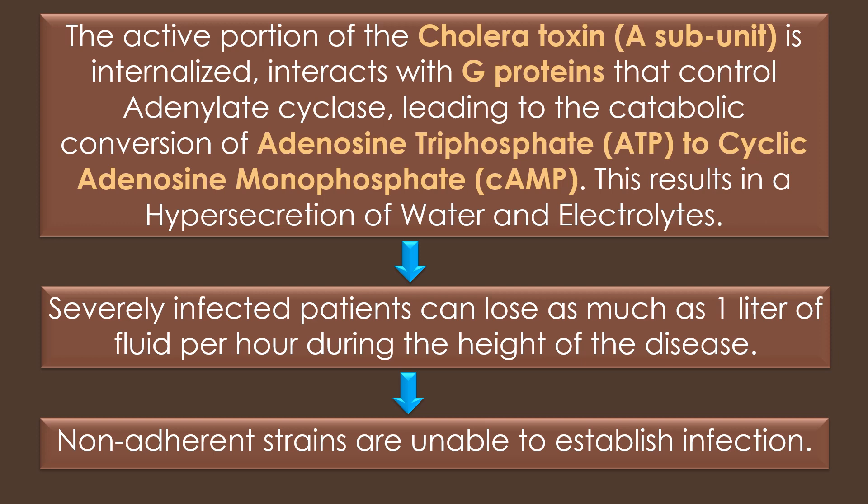Severely infected patients can lose as much as 1 liter of fluid per hour during the height of the disease. Such a tremendous loss of fluids would normally flush the organisms out of the gastrointestinal tract. Non-adherent strains are unable to establish infection.